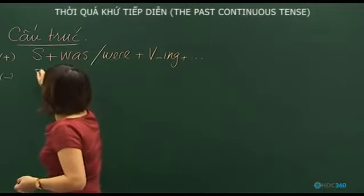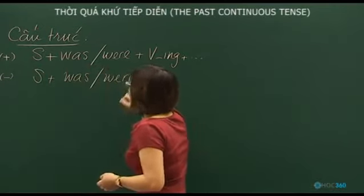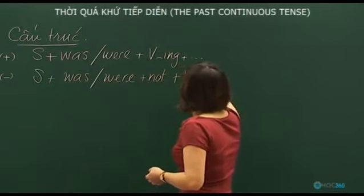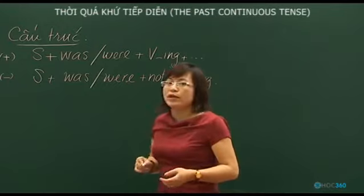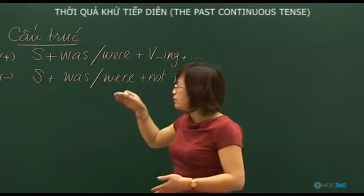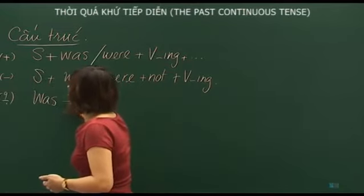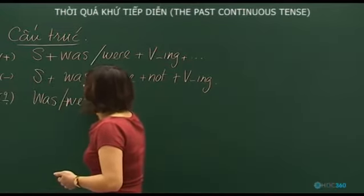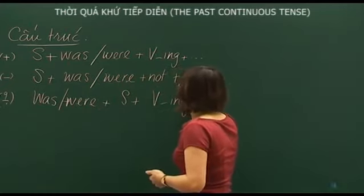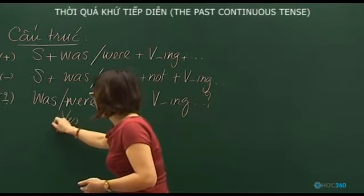For negative sentences, we add 'not' after 'were' or 'was'. For yes/no questions, we bring 'was' or 'were' to the front, followed by the subject and verb-ing. Note that there is a question mark, and we answer with yes or no followed by an affirmative clause.